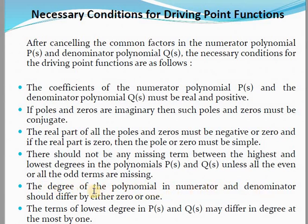Fifth condition: the degree of the polynomial in the numerator and denominator should differ by either 0 or 1 only; a larger difference is not allowed, otherwise the system will be unstable. Sixth condition: the terms of the lowest degree in P(s) and Q(s) may differ in degree by at most 1. For example, if P(s) has degree 4 and Q(s) has degree 5 or 3, that is acceptable. But if P(s) has degree 4 and Q(s) has degree 2, that is not acceptable.